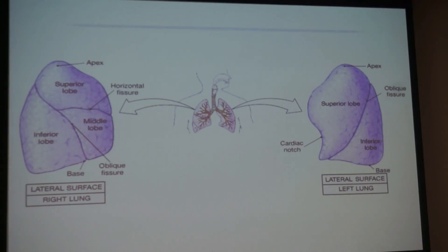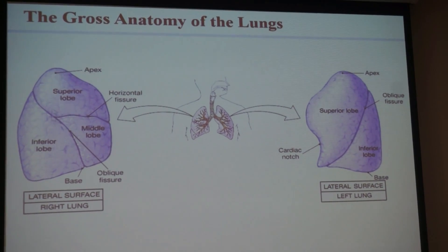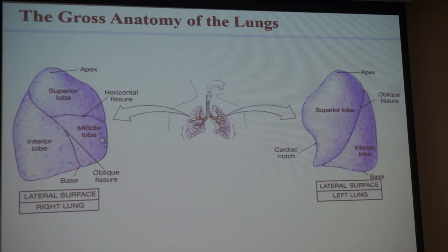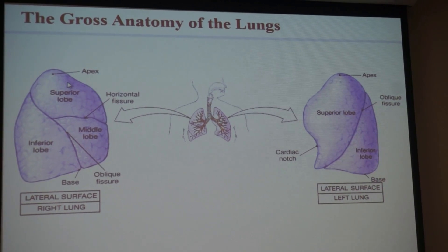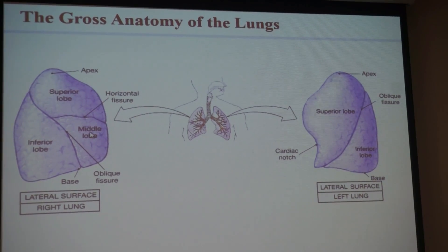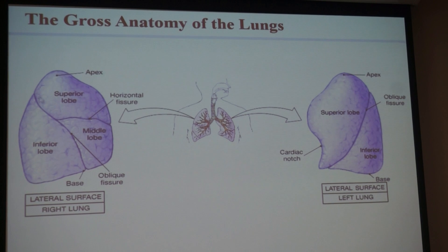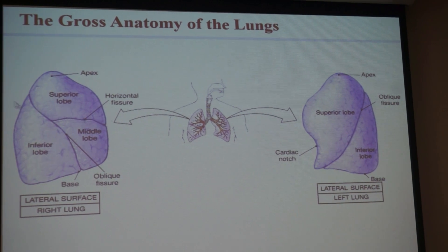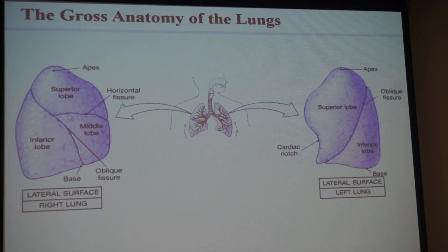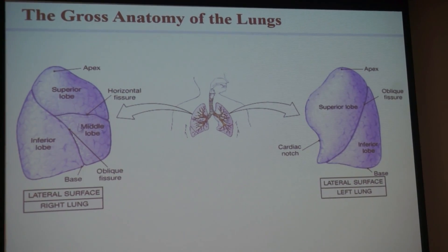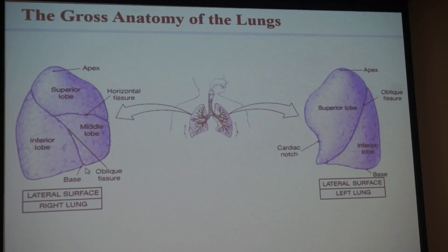Let's look at the lungs. The right lung has three lobes and you have to identify the lobes: superior, middle, and inferior. You'll see these little lines that kind of separate them — a horizontal fissure and an oblique fissure.